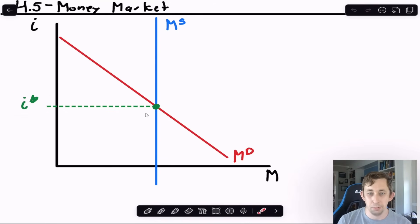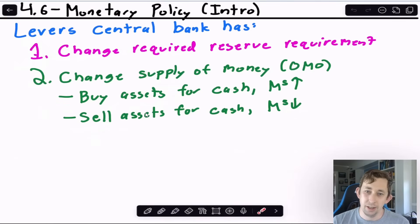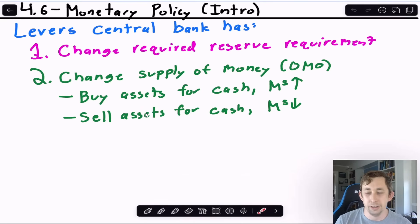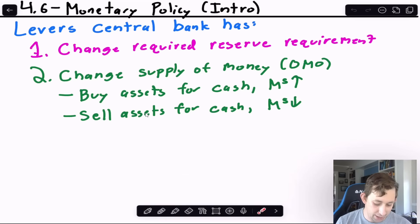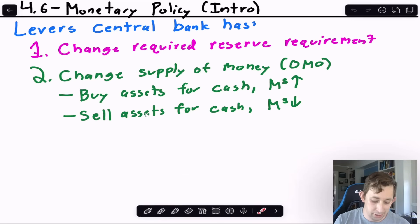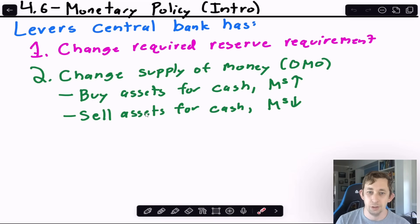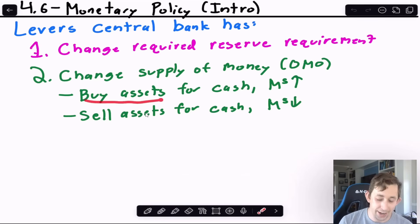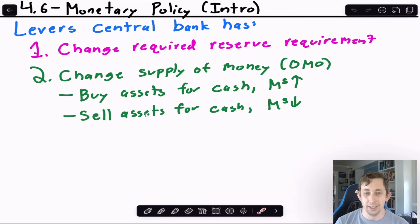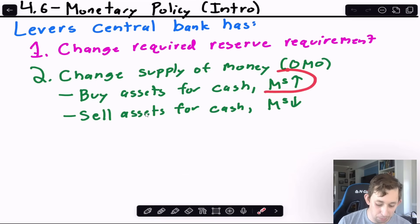This brings us to monetary policy. The central bank has two main tools. First, it can change the reserve requirement ratio, altering how much banks must keep in their vaults. Second, it can change the money supply through open market operations — buying assets like Treasury bills from the private sector, injecting cash into the system and increasing the money supply.